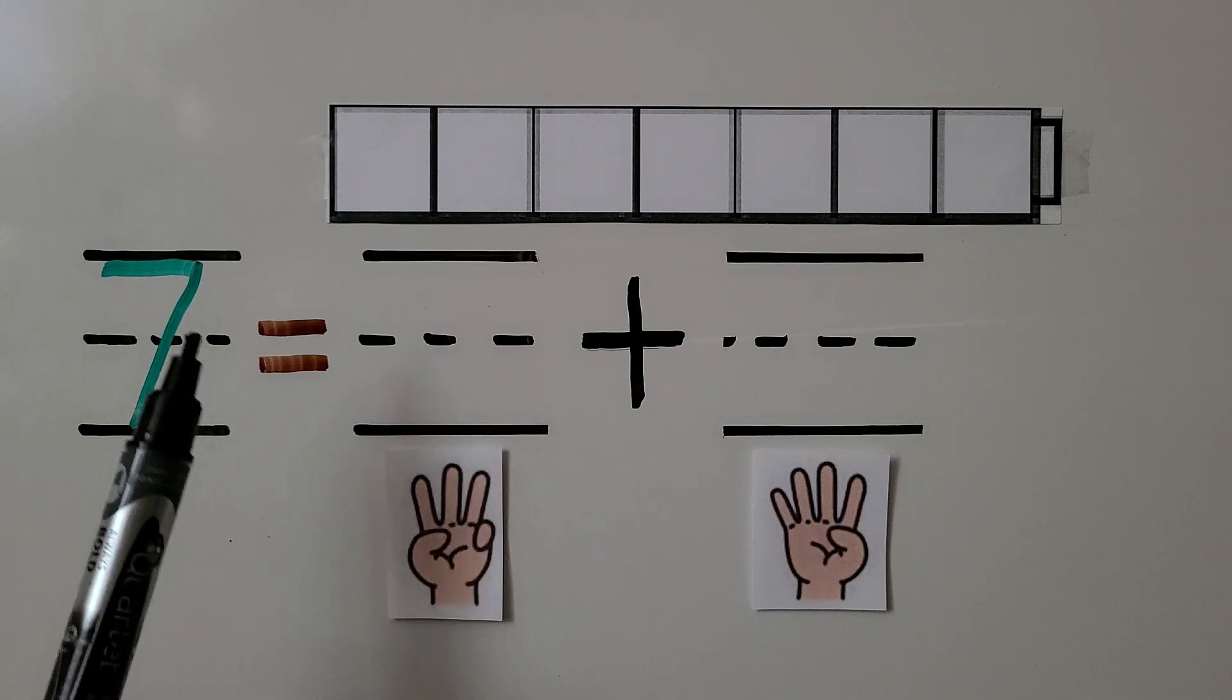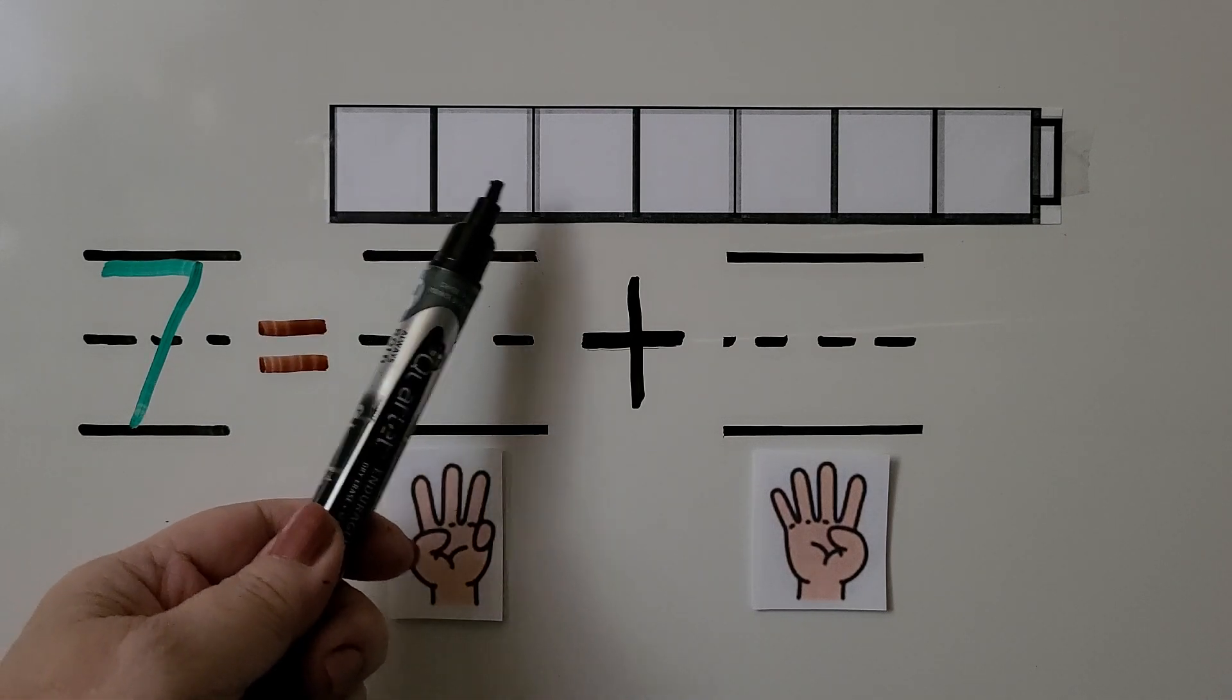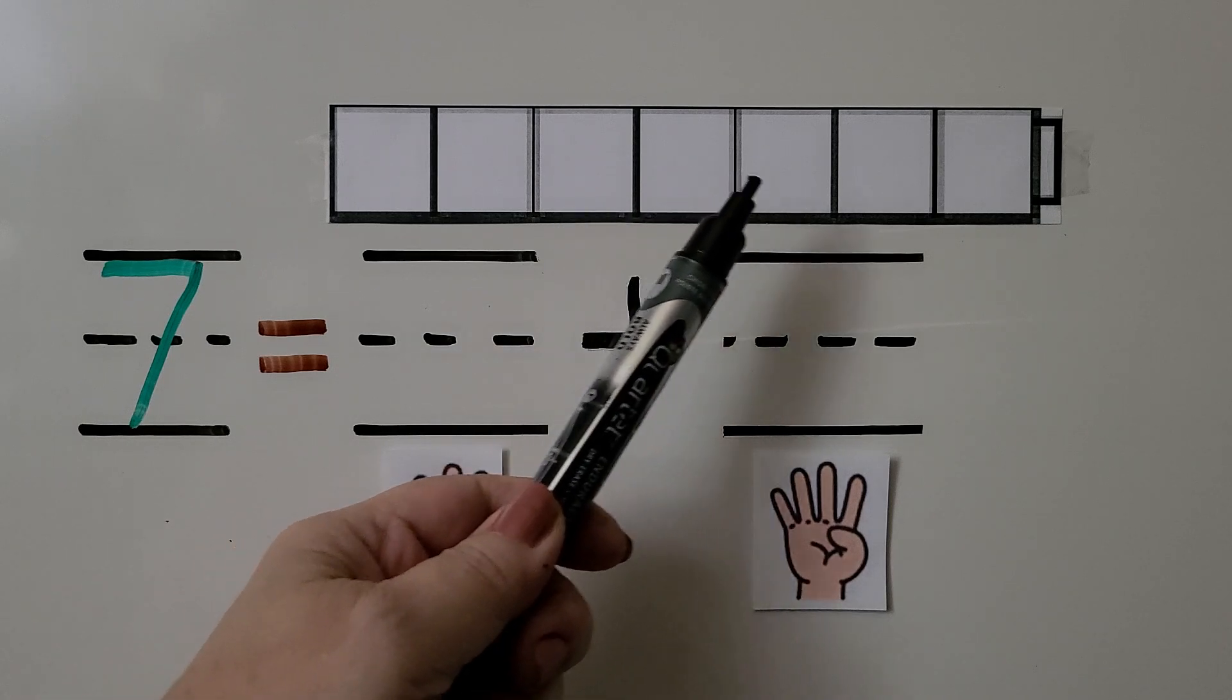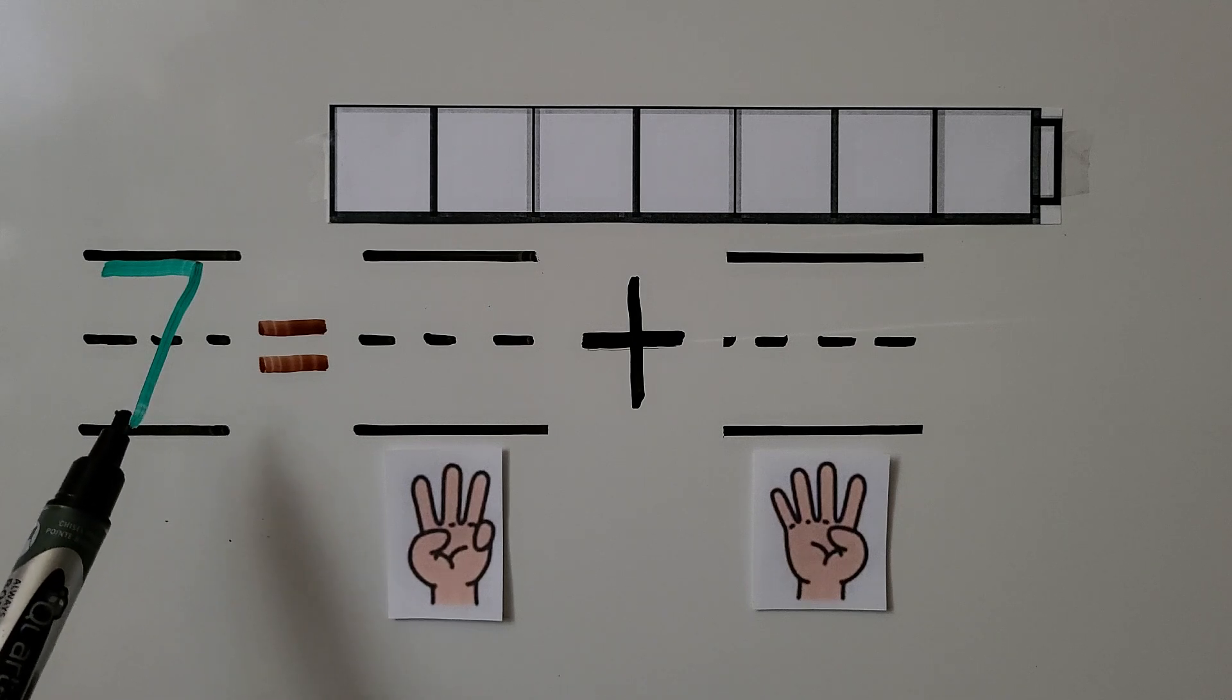Here, let's count the number of cubes in this cube train. There are 1, 2, 3, 4, 5, 6, 7. There are 7 cubes in this cube train. We can color the cubes to show different numbers and number pairs to make 7.